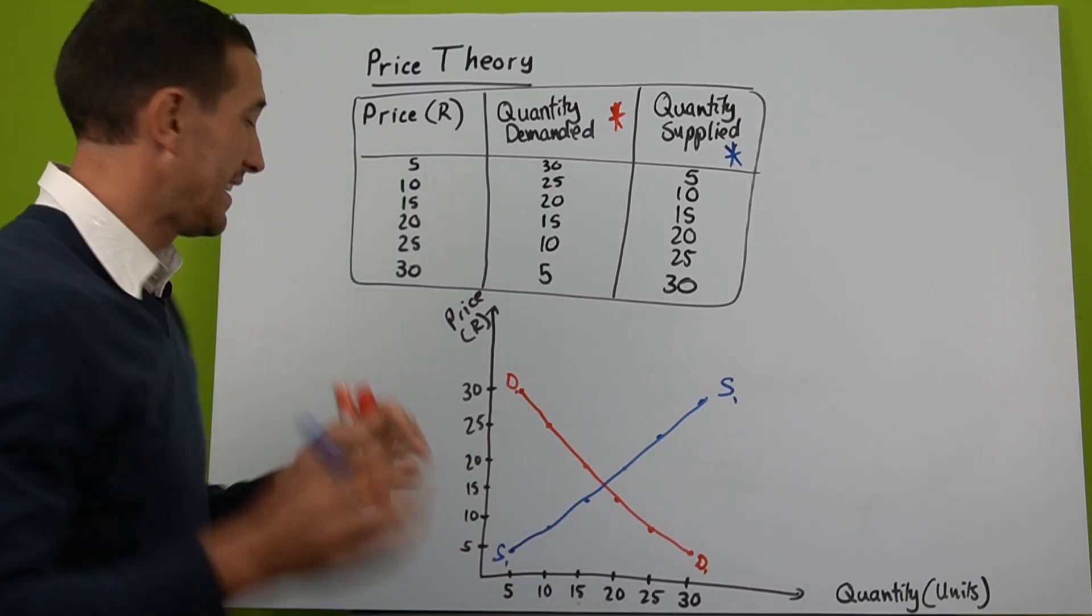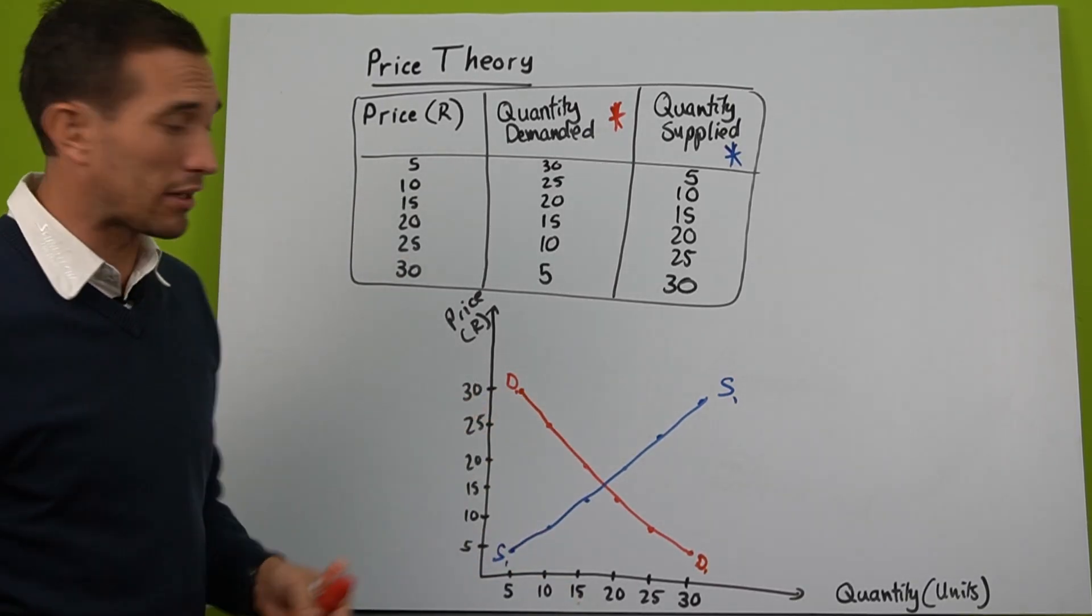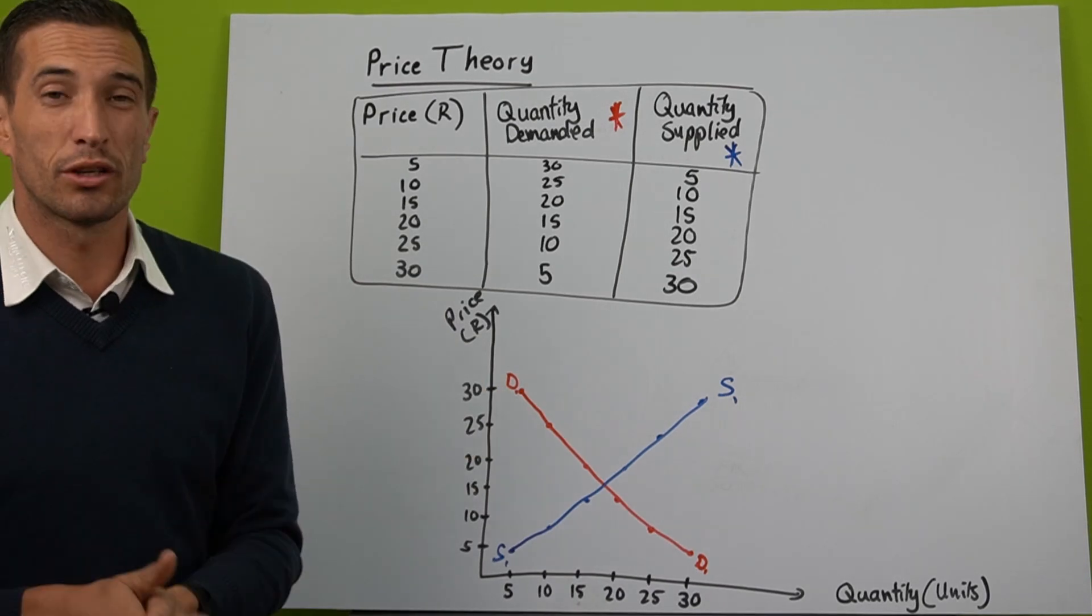So this is a demand and supply graph that is on the same graph. You can do it individually, but normally they will ask you to draw it on one graph.